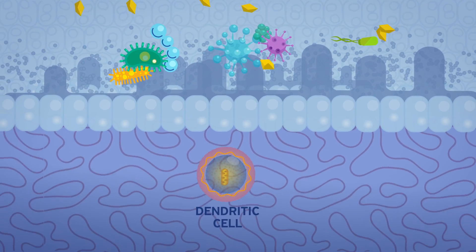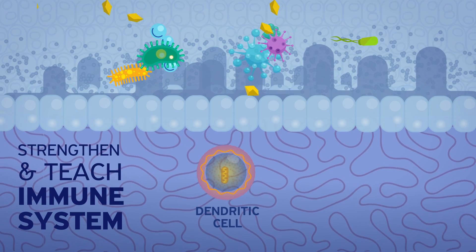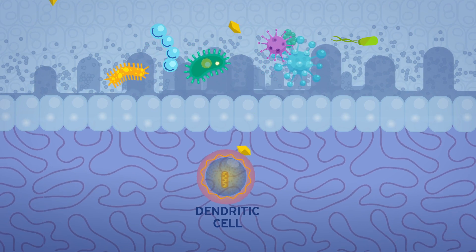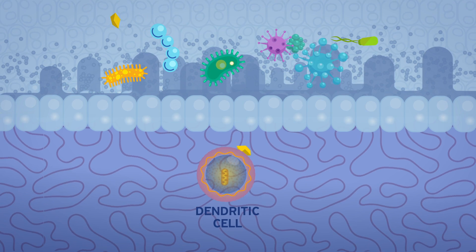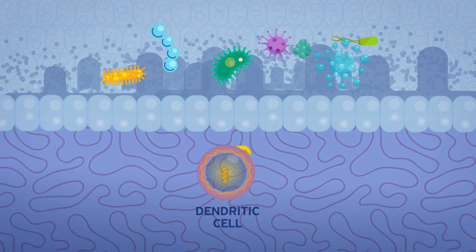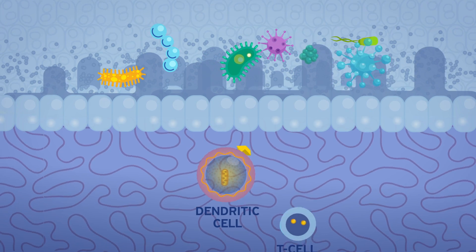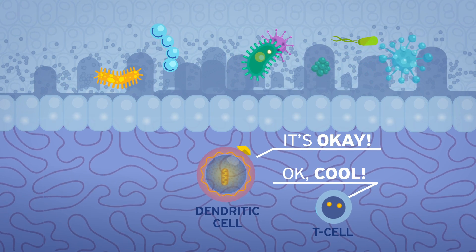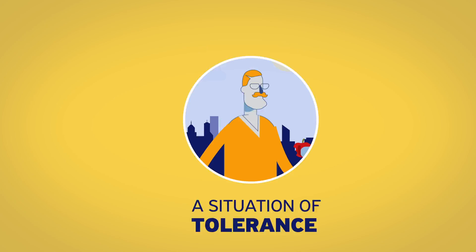Dendritic cells form the first line of defense in the gut barrier. When these cells are instructed by good bacteria, they will not perceive food molecules passing through the barrier as a threat. They will inform the T-cells that everything is okay and they can stay cool and keep the peace. We now have a situation of tolerance.